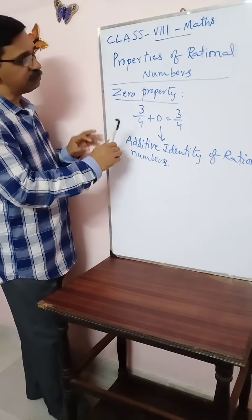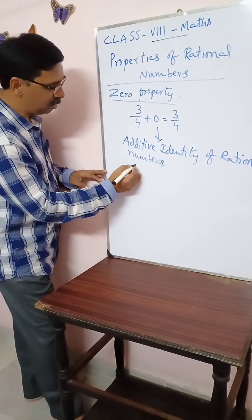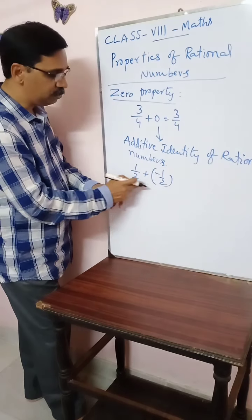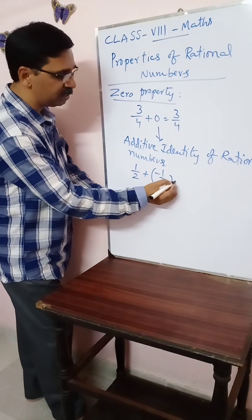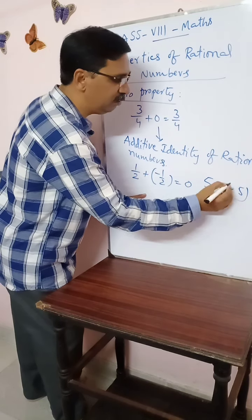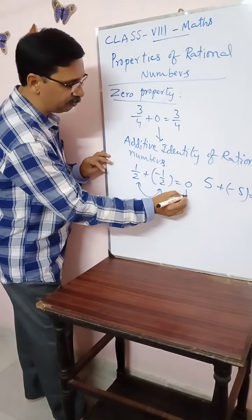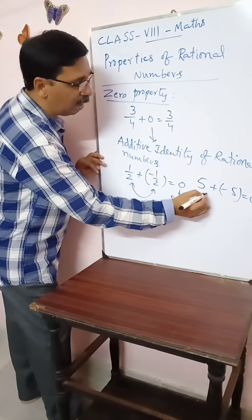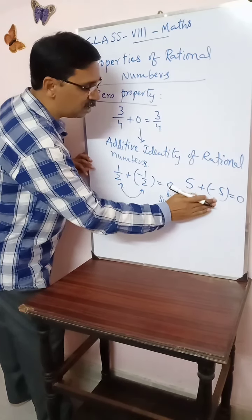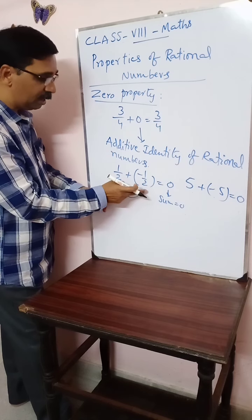Next, suppose we add two rational numbers and the sum is zero. For example, 1/2 plus minus 1/2 — the result is zero. Just like 5 plus minus 5 is equal to zero. So here, two rational numbers are added and the sum is zero. These two rational numbers are called the additive inverse of each other.